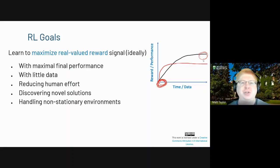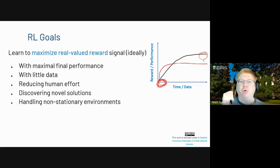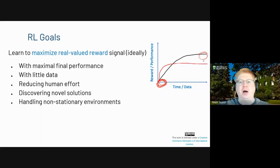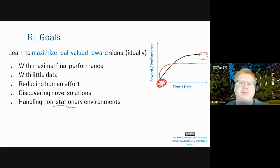We can think about maximizing final performance, minimizing data, or reducing human effort — I could either hand-code something or let reinforcement learning learn for me. You can also think about novel solutions. A few years ago at RoboCup, robots discovered that crawling on elbows and forearms was much faster than walking on paws — something a human might not think of, but an RL algorithm might find. And in non-stationary environments like stock trading, where things change over time, you'd better change with it.